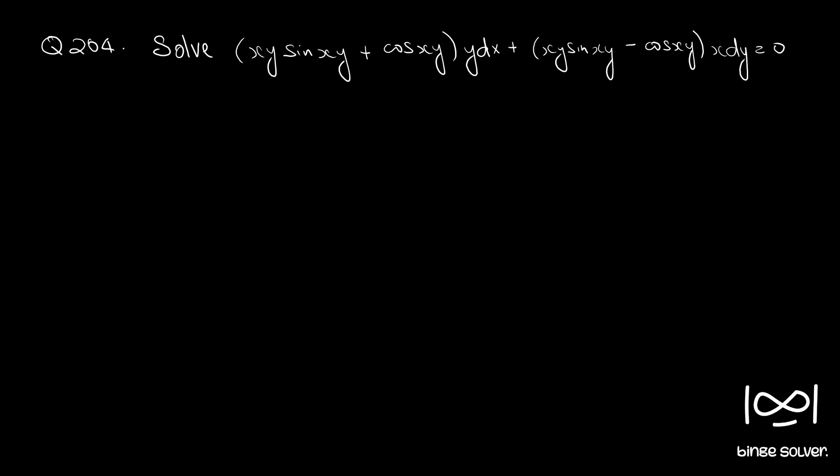Question number 204. Solve: (xy·sin(xy) + cos(xy))y dx + (xy·sin(xy) - cos(xy))x dy = 0.